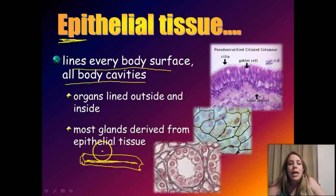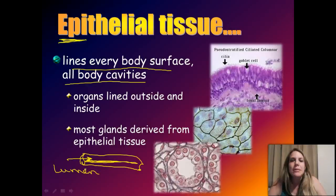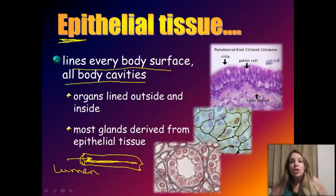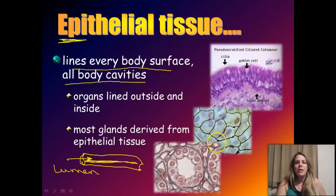Imagine a tube — a blood vessel, digestive tract, or trachea. There's always a space inside that tube and outside of it. The space that goes inside a tube is called the lumen. Anytime you hear the word 'lumen,' it means space. Epithelial tissue lines the inside and outside of these tubes, and its function relates directly to why we want that lining there.